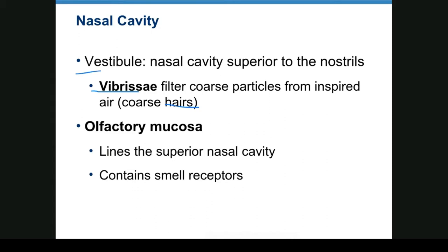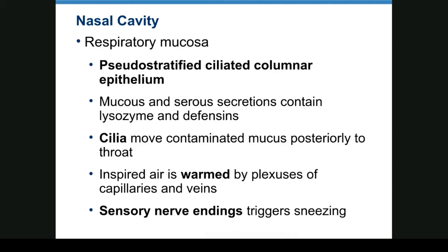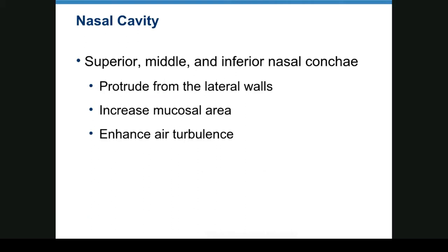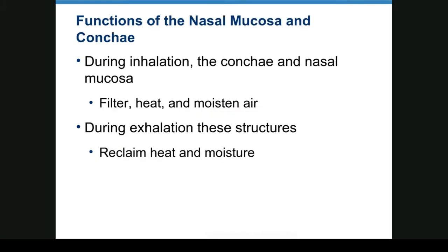The olfactory mucosa lines the superior nasal cavity and contains smell receptors. The respiratory mucosa is pseudostratified ciliated columnar epithelium with mucus and serous secretions. Cilia move mucus toward the throat, and inspired air is warmed by capillaries and veins. We also have sensitive nerve endings that trigger sneezing. During inhalation, the conchae and nasal mucosa filter, heat, and moisten air — because if cold dry air gets straight into your lungs, it's going to hurt them. During exhalation, they reclaim the heat and moisture.